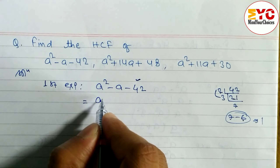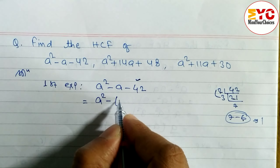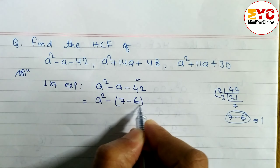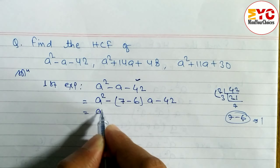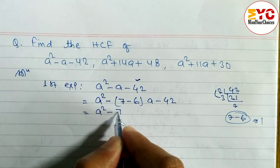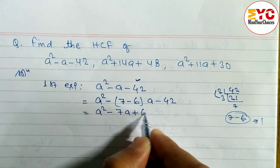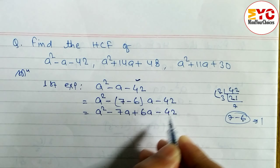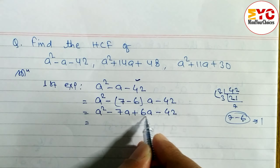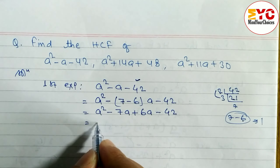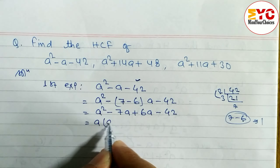So we got the factors 7 and 6. We write: a squared minus, and in place of 1 we write 7 minus 6, so: a squared minus 7a plus 6a minus 42. Now open the bracket. From the first two terms we take common, and from the last two terms we take common.